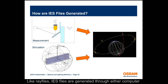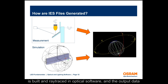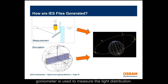Like ray files, IES files are generated through either computer simulation or measurement. For simulation, a detailed model is built and ray traced in optical software, and the output data is structured into IES format. For measured data, a far-field goniometer is used to measure the light distribution.